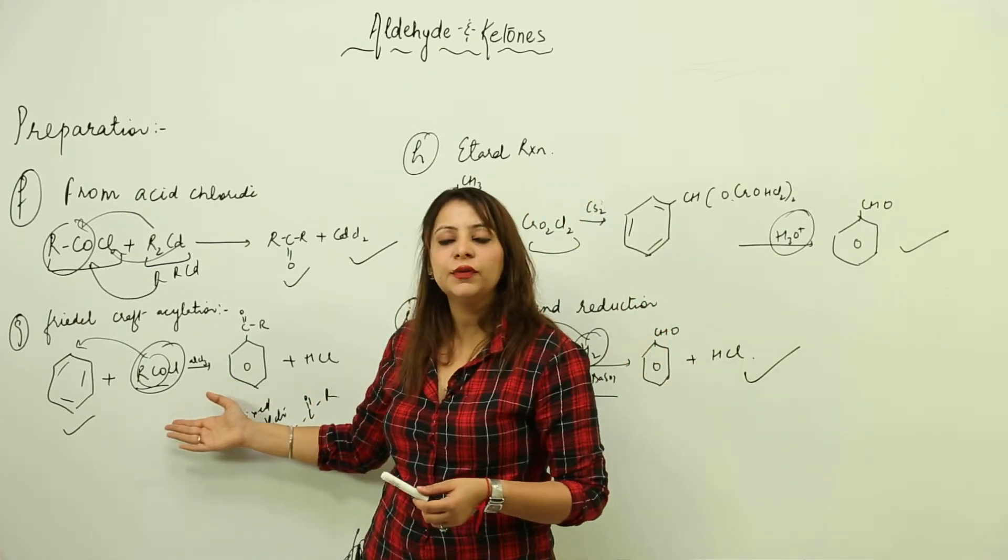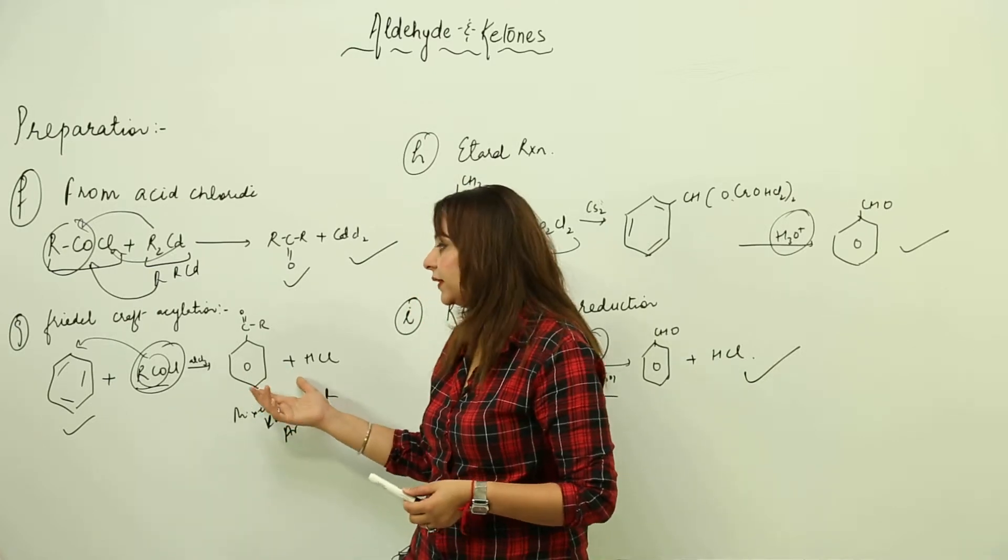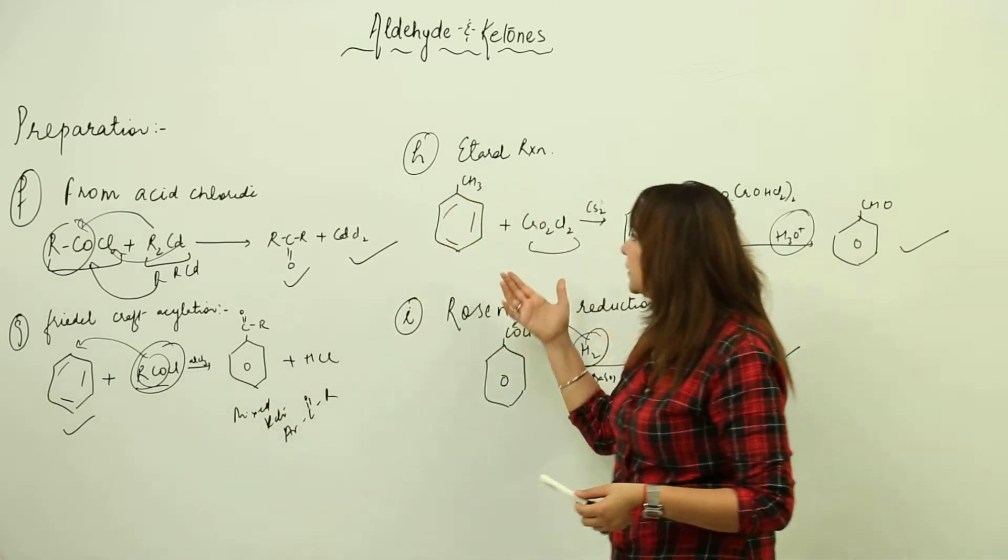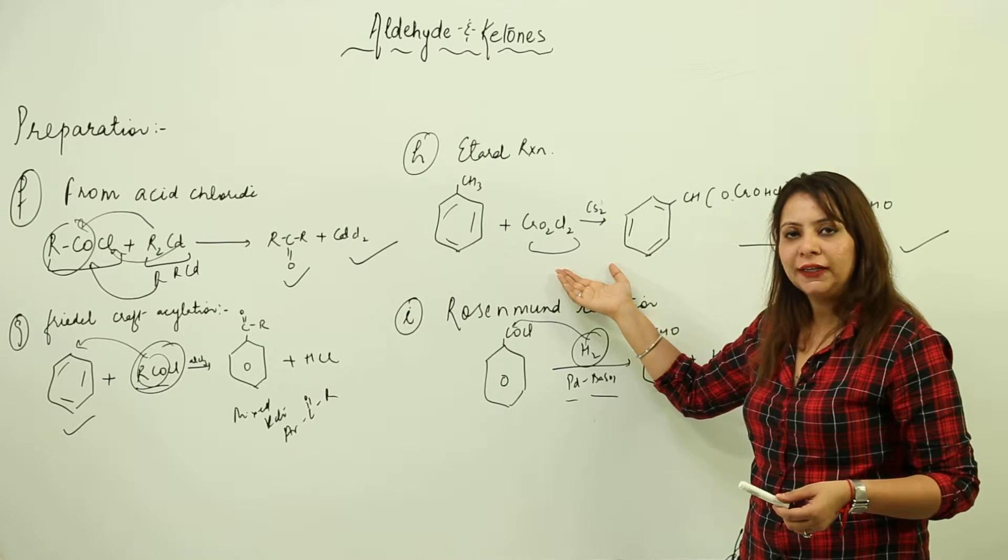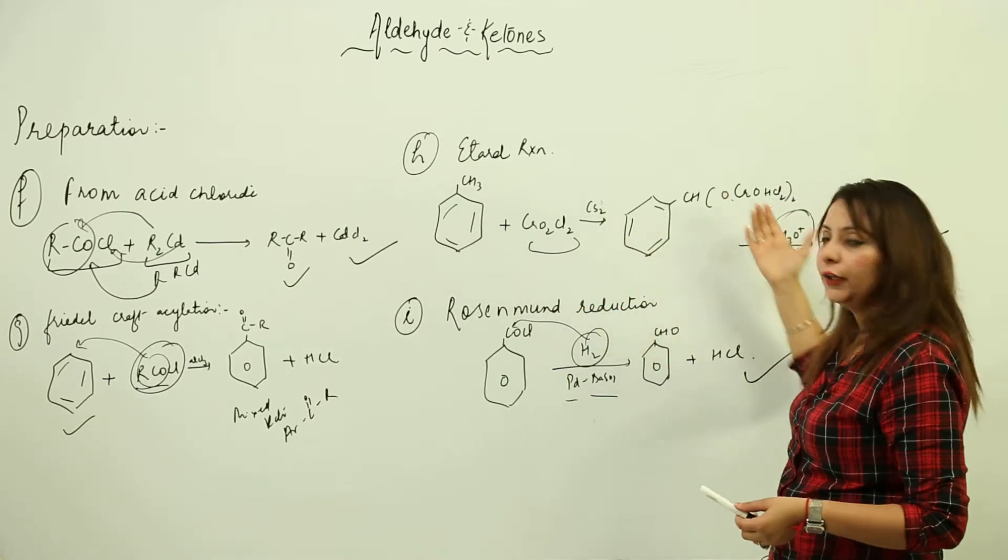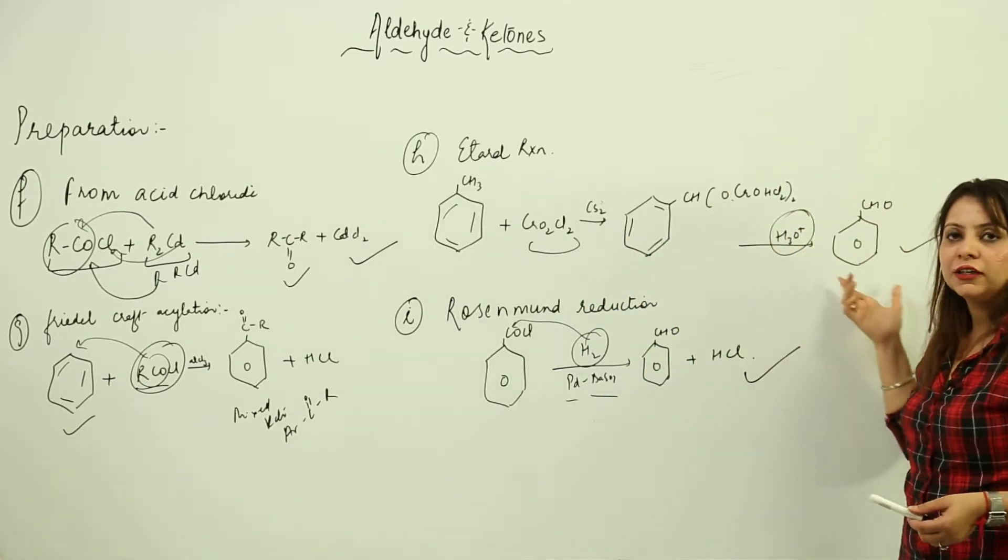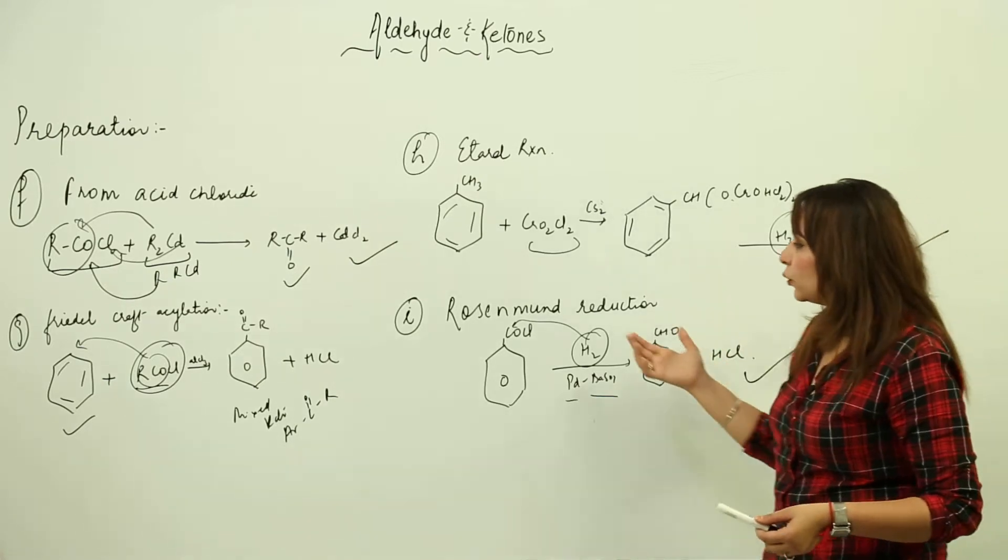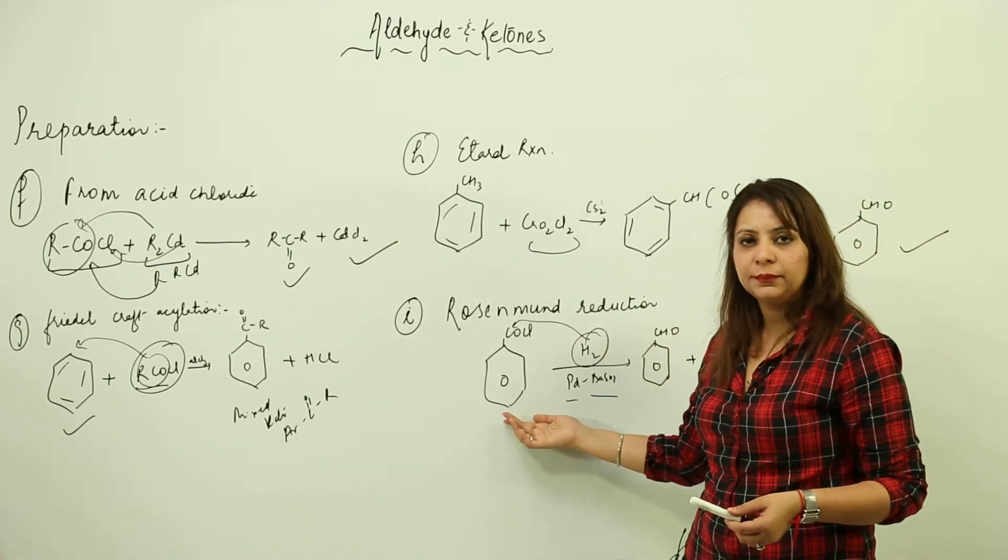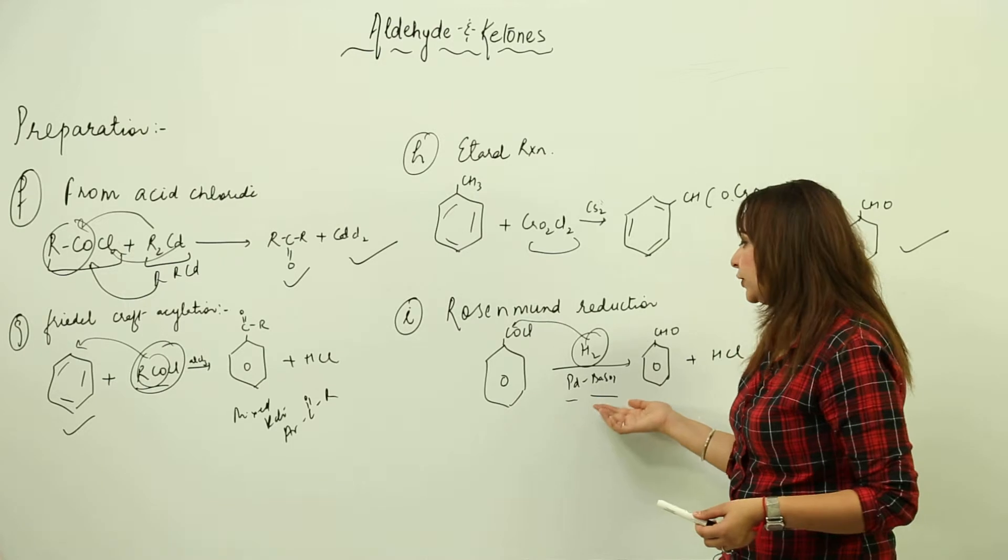In toluene we react with chromyl chloride, get an intermediate which on treating with hydronium ion turns into benzaldehyde. Rosenmund reduction - we have benzoyl chloride, carry out reduction in presence of palladium BaSO4, and it converts into an aldehyde.